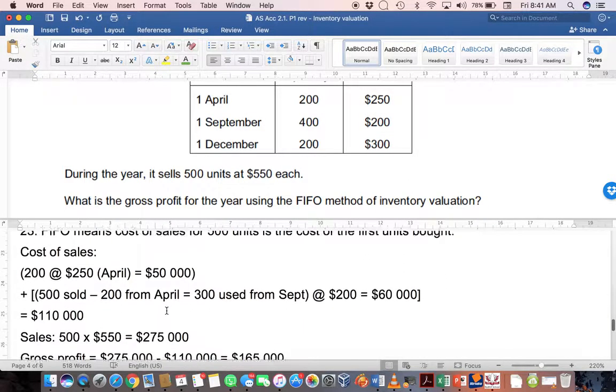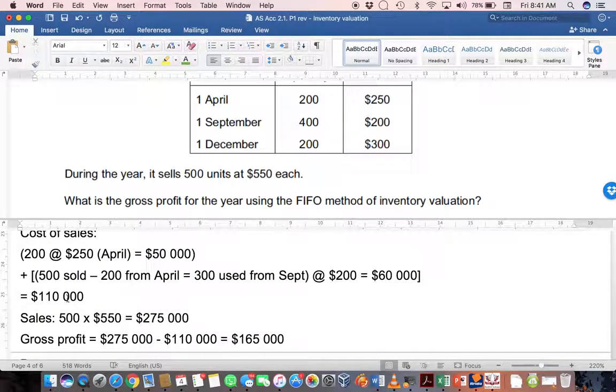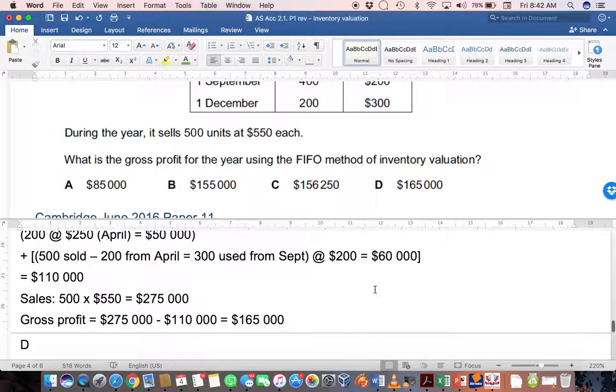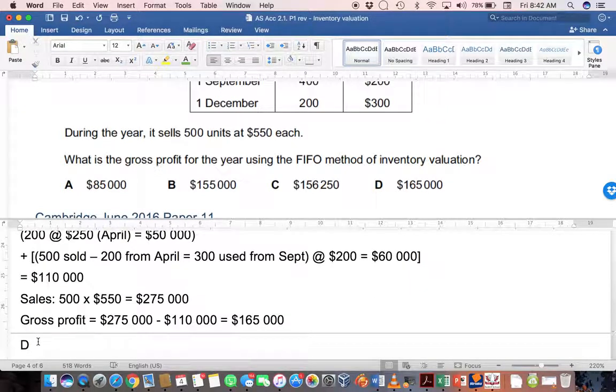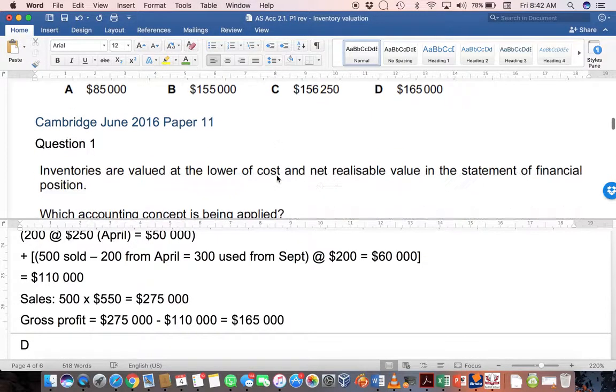But remember the question is asking what is the gross profit. So I still need to work out my sales. My sales would be that full 500 units at $550 each selling price. So my total sales is $275,000. To calculate gross profit, I simply subtract the cost of sales from the sales and get a gross profit of $165,000. If you look at all the options here, you can see this time it was D. Isn't it lucky we didn't just choose C?